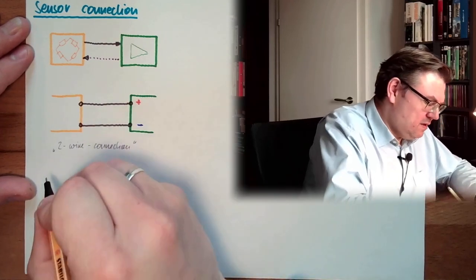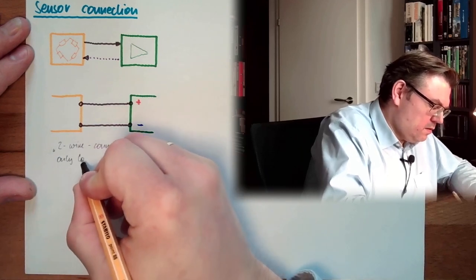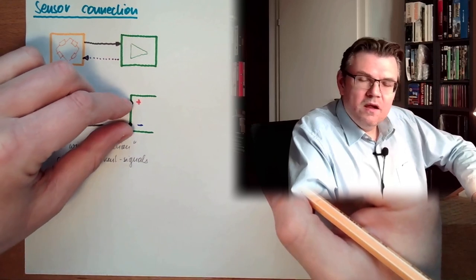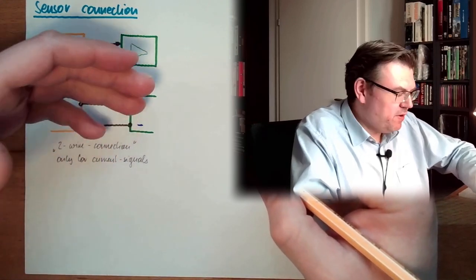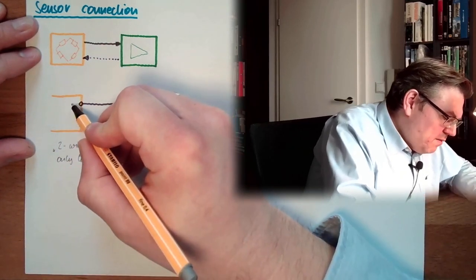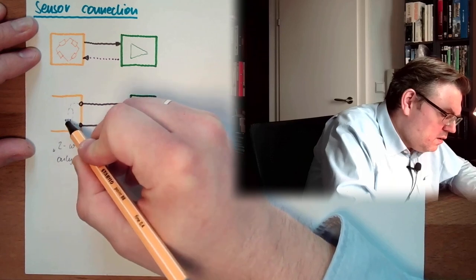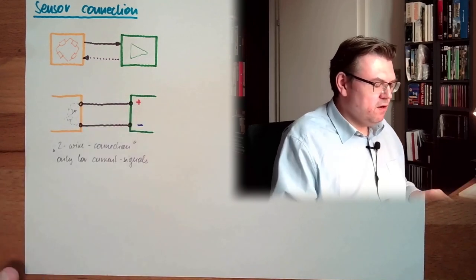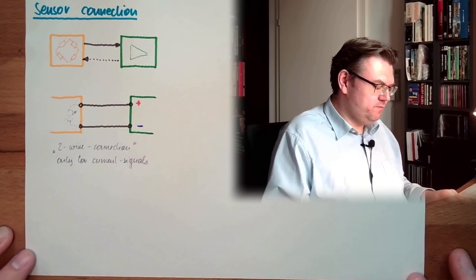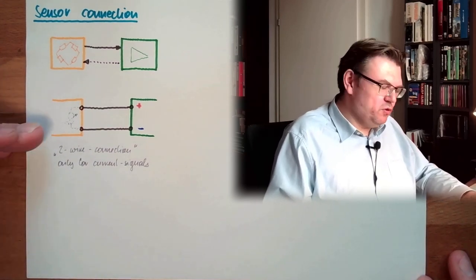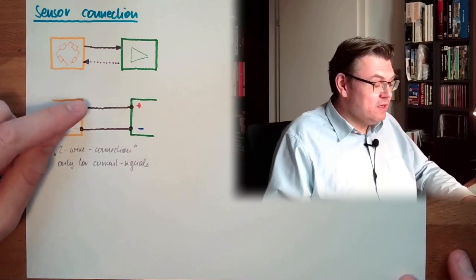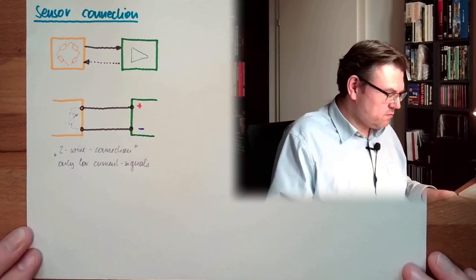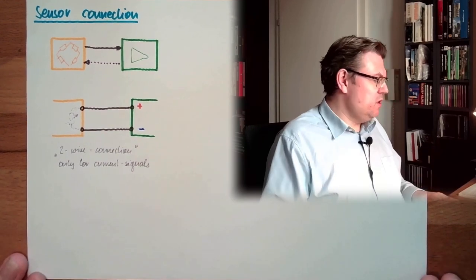It's only for current signals. Because if we have here the power supply, the power supply will not change, right? So the only thing you can imagine, the sensor is somehow choking the current. And the current is measured here and is displayed. Two-wire connection. Usually it's also with living zero. So usually it's a 4 to 20 milliamp signal. Because this sensor usually needs some power on its own. So we use the first 4 milliamps for powering the sensor.